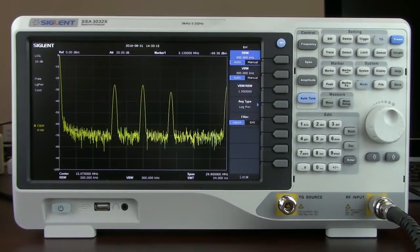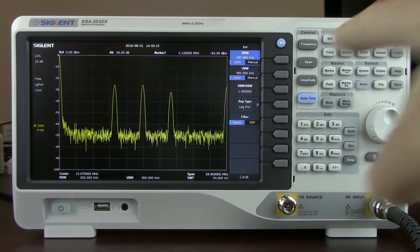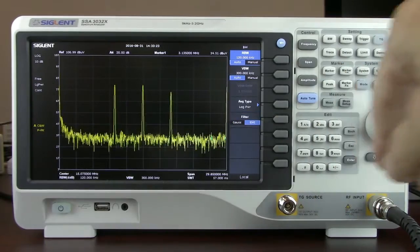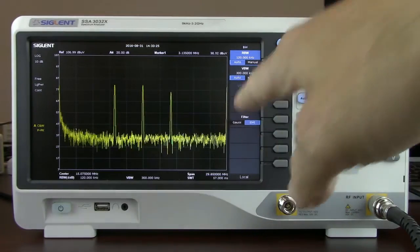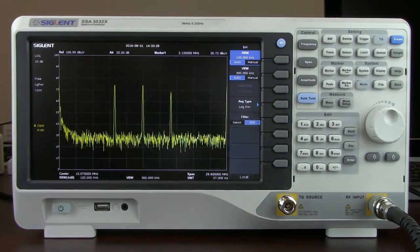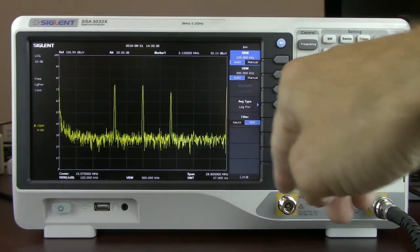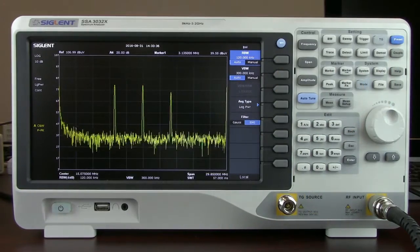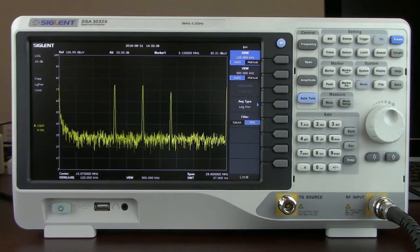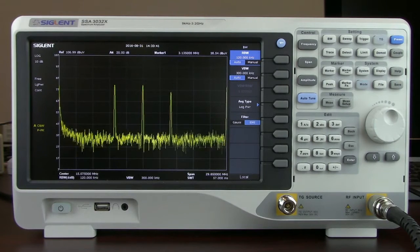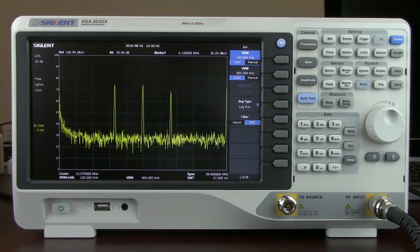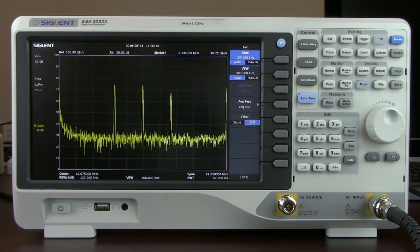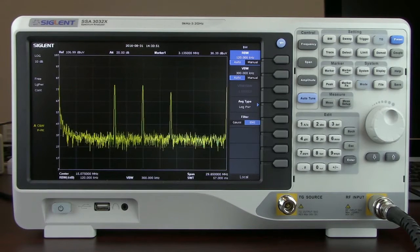Some of the things that come with this feature are the EMI filter. We can enable that by pressing the bandwidth key and then enabling EMI. Once you've enabled the EMI filter, that's a 6 dB filter as compared to the normal 3 dB Gaussian filter. That 6 dB EMI filter then enables you to select resolution bandwidths of 200 Hz, 9 kHz, and 120 kHz. Those are defined bandwidths for the FCC as well as CISPR measurement standards for compliance.